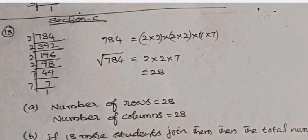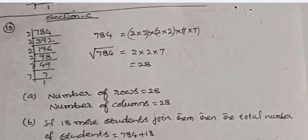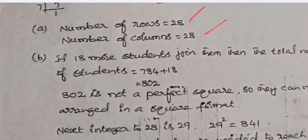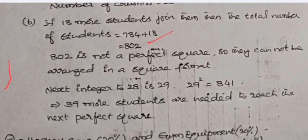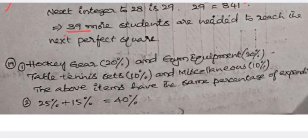Section C solution: To arrange 784 students in equal rows and columns, find the square root of 784. By the factorization method, the square root is 28, so there are 28 rows and 28 columns. If 18 more students join, the total becomes 802, which is not a perfect square. The next perfect square after 802 is 841 (29 squared), so 39 more students are needed to form a square arrangement.